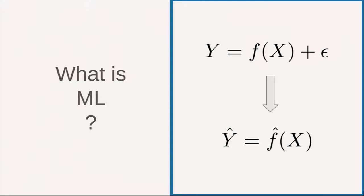What we want to do is approximate the underlying process F by some other thing we call F-hat. When we put our data in there, we get an approximate output Y-hat. And sometimes we don't even know what the outcome is — for example, if you have a bunch of documents and you want to know what they are about, you don't even know what to expect; you just want to see whether you can identify some underlying structure.